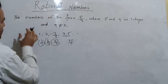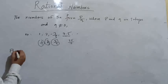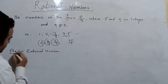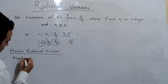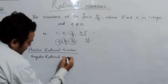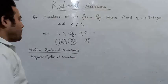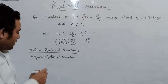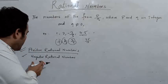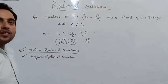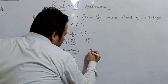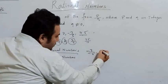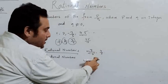There are two types of rational numbers. A rational number whose numerator and denominator have the same sign is known as a positive rational number. For example, minus 3 by minus 5 — here numerator and denominator both have a minus sign — and 4 by 5, where numerator and denominator both have a plus sign.